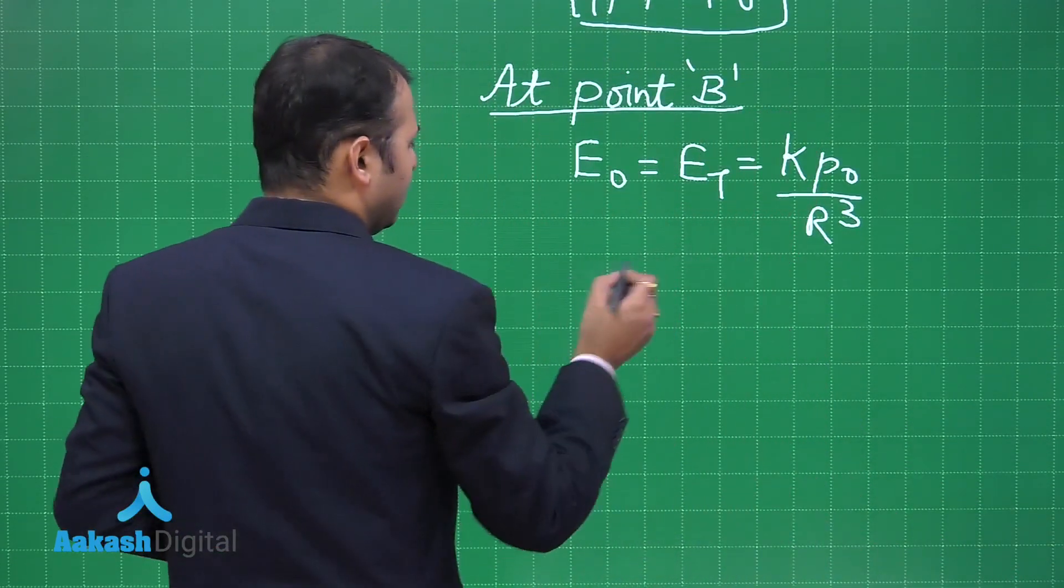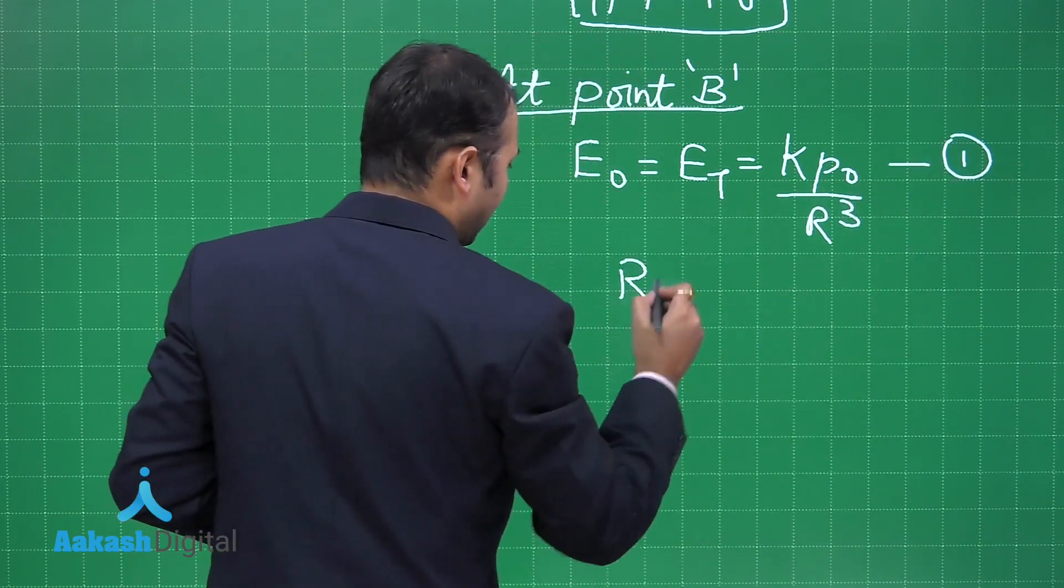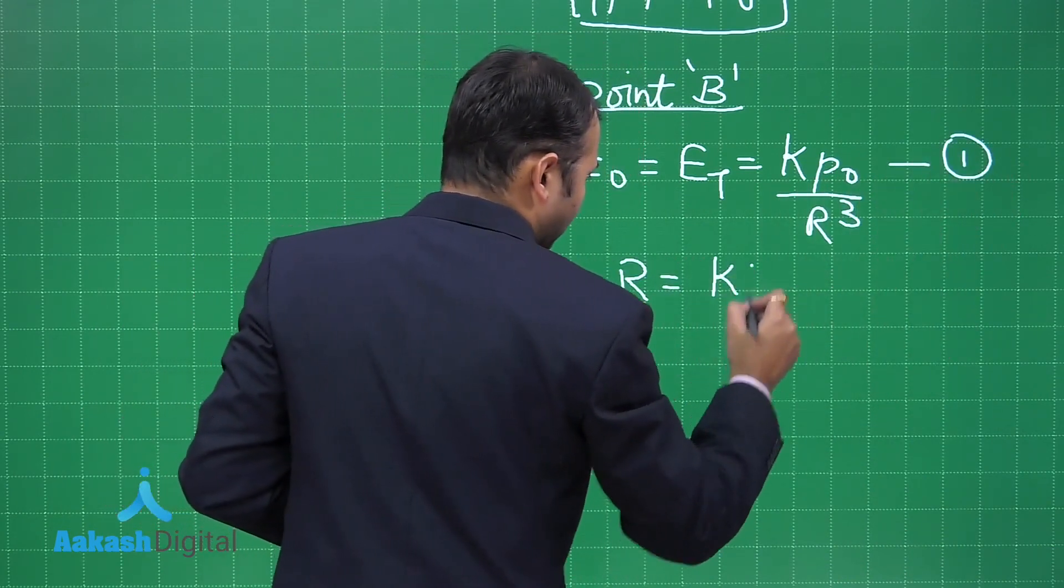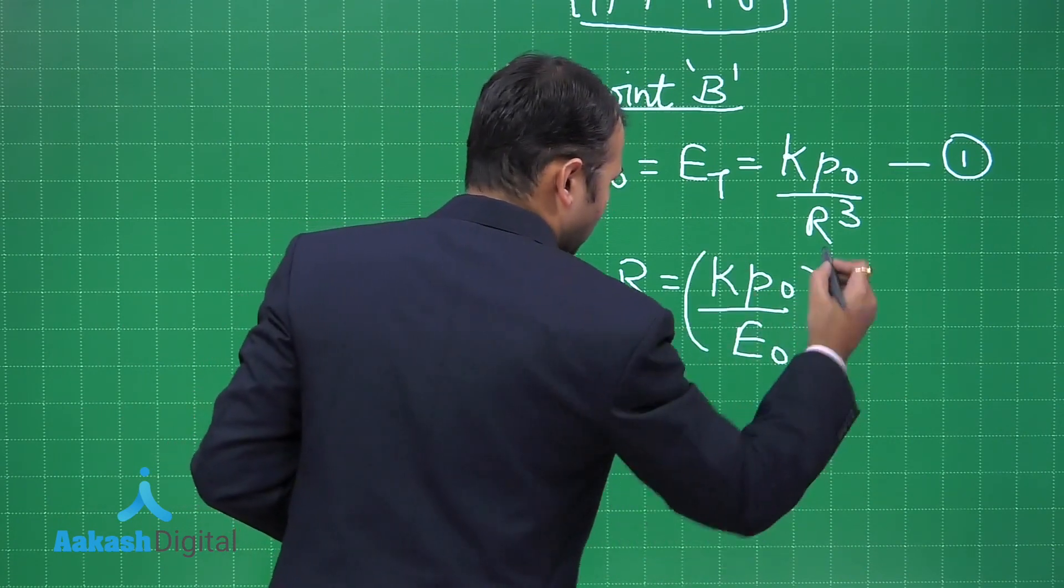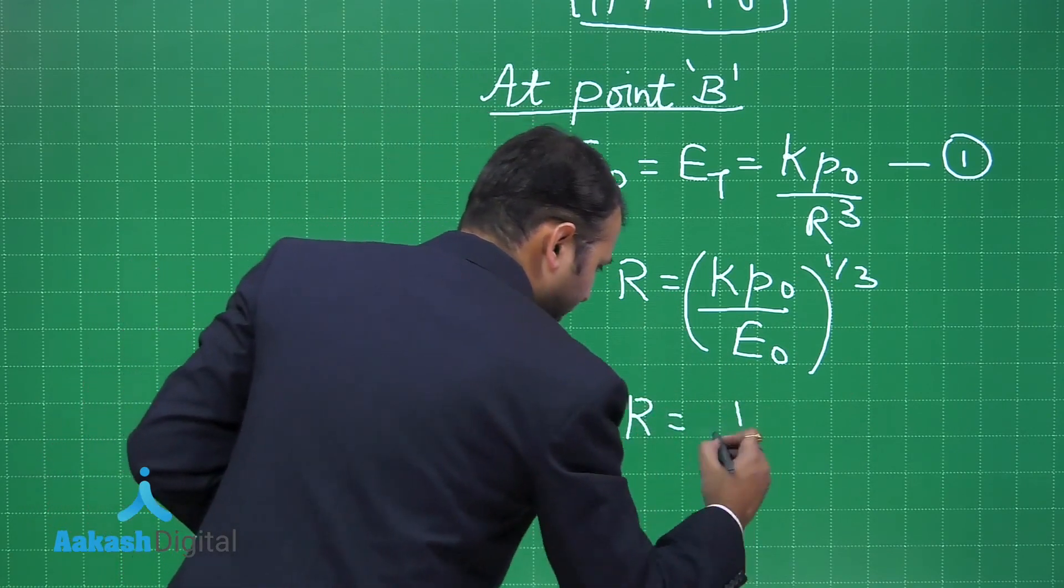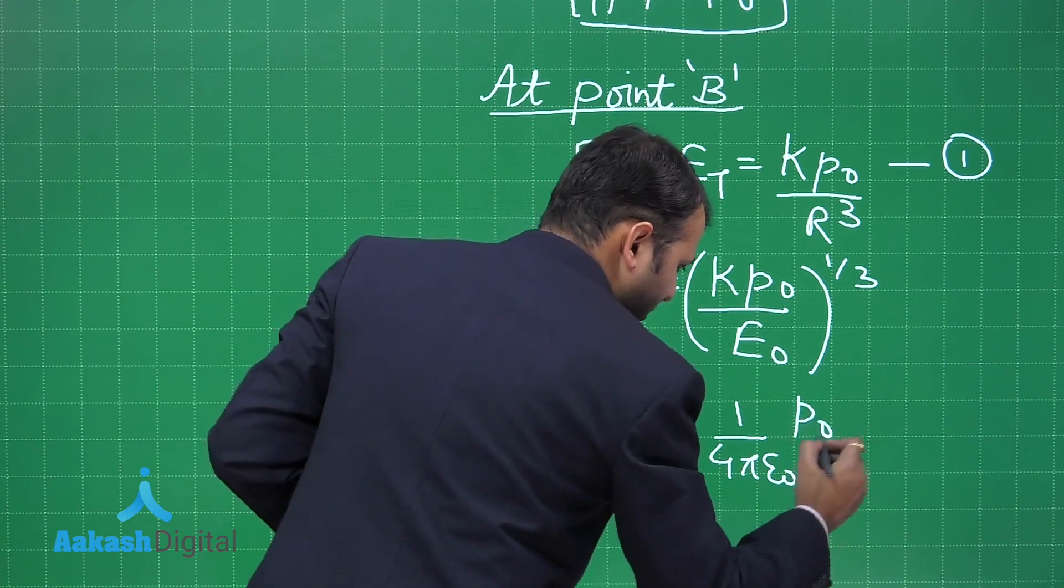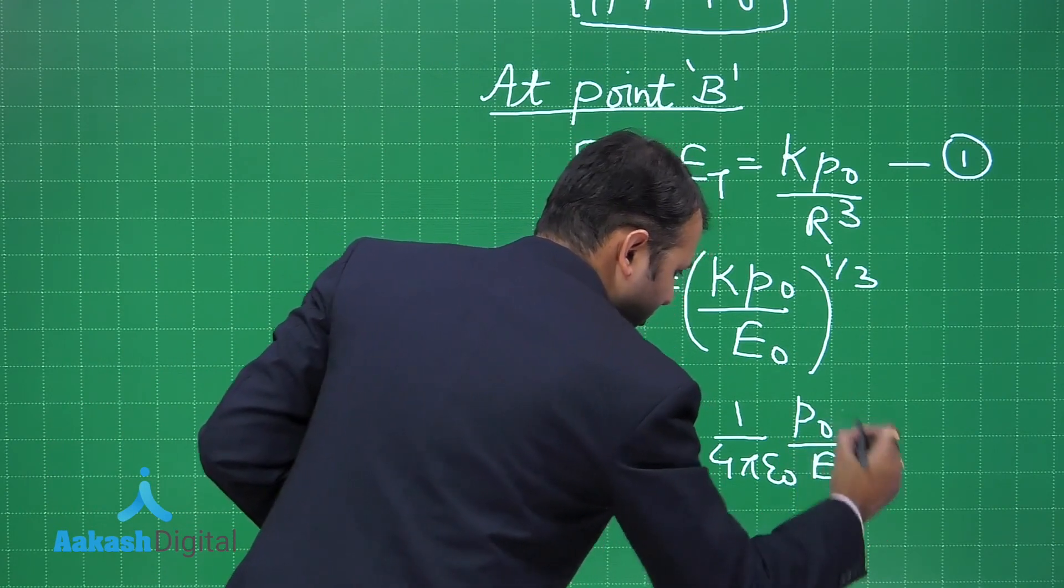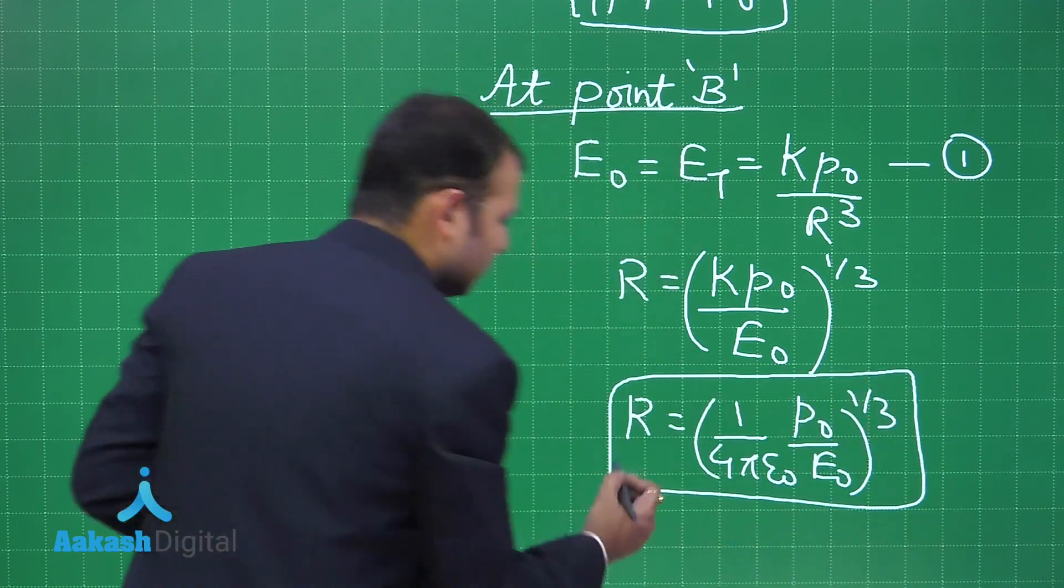Now from here you can also interpret, let's take this as first equation, you can also interpret R equals (kP₀/E₀)^(1/3). And this k can also be written as 1/(4πε₀) × (P₀/E₀)^(1/3). This is the option C we wanted.